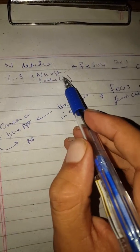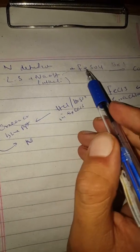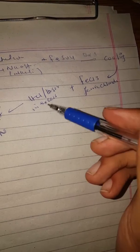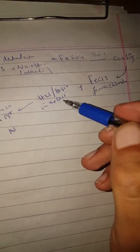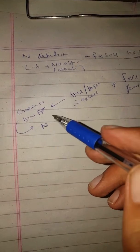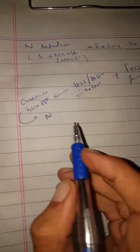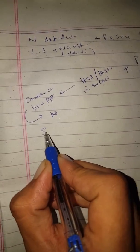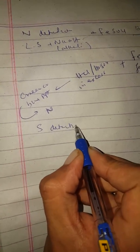We have the sodium extract solution treated with NaOH. Then we have to boil it. After cooling it, we have to add ferric chloride and H2O. If we get a green or blue precipitate, this means that nitrogen is present in the organic compound.